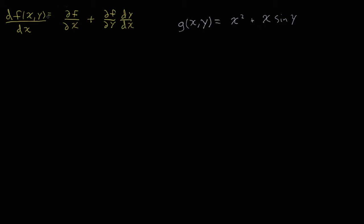To illustrate how this kind of makes sense, let's take the full derivative and the partial derivative of this function g of x and y, assuming that x and y are not independent — that they're related to each other in some way. So let's take the partial derivative with a curly d here — the partial derivative of g with respect to x. We can take the derivative of each piece one at a time.